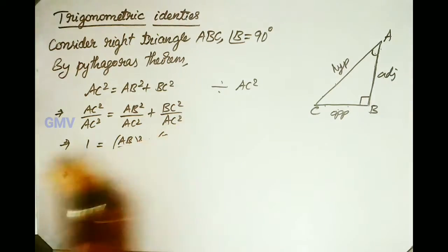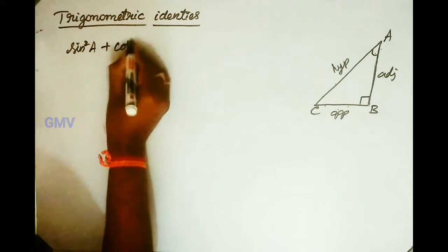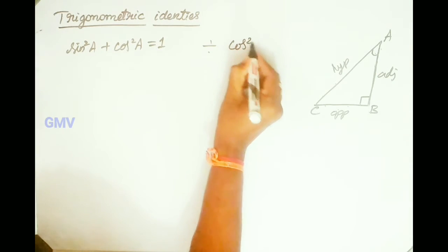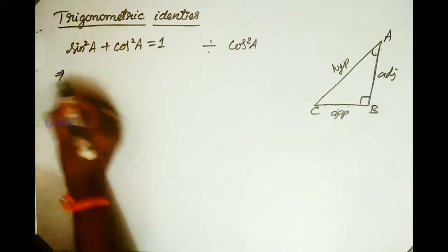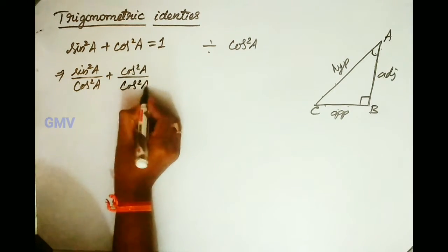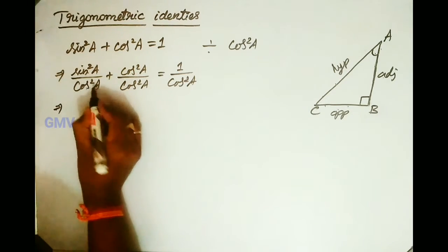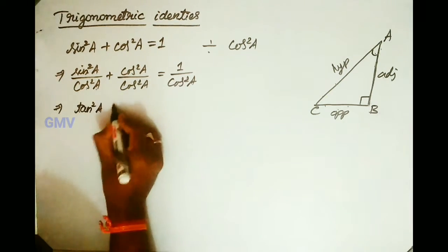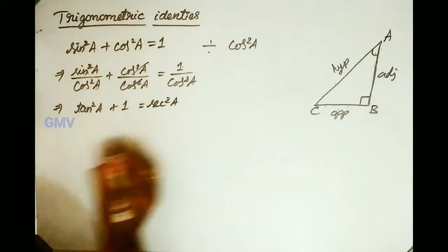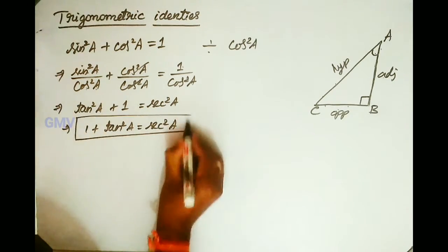Now let us consider the first trigonometric identity: sin²A + cos²A = 1. Let us divide this entire equation by cos²A. Then we get sin²A/cos²A + cos²A/cos²A = 1/cos²A. Since sin/cos is tan and 1/cos is secant, this gives us 1 + tan²A = sec²A. This is the second trigonometric identity.